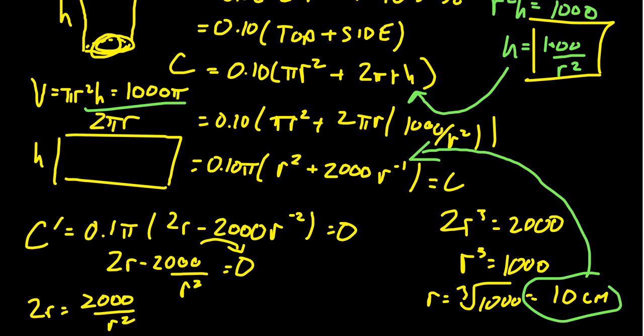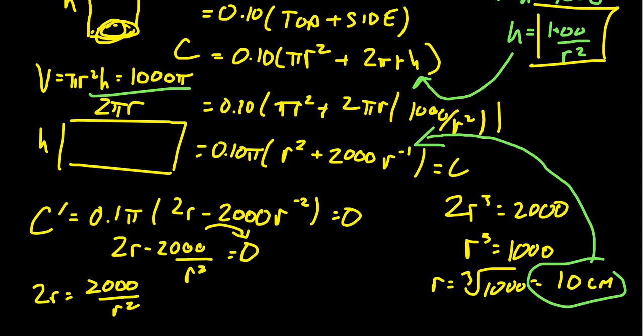With optimization problems, it's not always the case that the optimal solution is a critical number. Sometimes it's the boundary, which is why we considered it earlier. Another way to verify this is the minimum is to use the second derivative test. If we calculate the second derivative and plug in r = 10, it would be positive, confirming we have a minimum value. Let's plug this into our cost function.